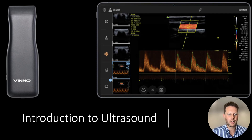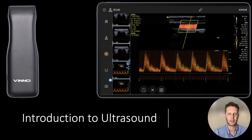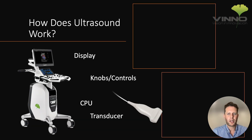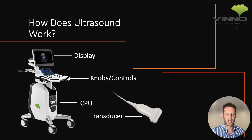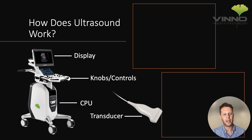Hi, I'm Stuart from Veno Ultrasound and welcome to this very brief introduction to ultrasound for aesthetics. Let's start quickly with how an ultrasound machine works. Every ultrasound machine is going to have a computer, some knobs or controls to adjust the image, a monitor to display the image, and a transducer. The ultrasound transmits and receives ultrasound waves via the transducer, and then the computer interprets those waves and displays an image in real time.